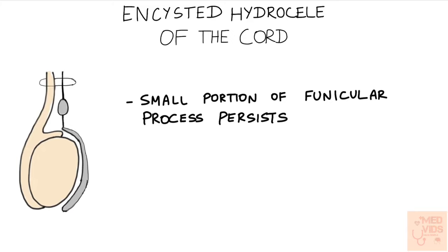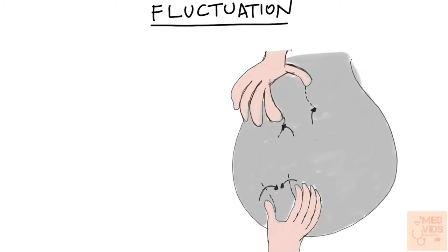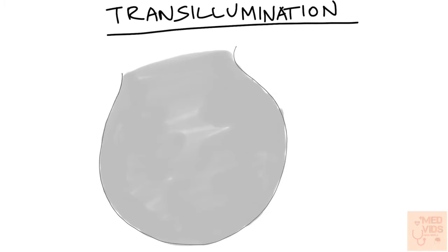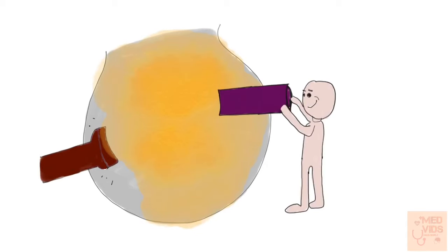Now let us see how to elicit fluctuation. Hold the swelling above and below with your two hands between thumb and other fingers. If you gently press from below, you can feel the fingers of the upper hand going away — this is how fluctuation is elicited. To elicit transillumination, place a torch on the scrotum and turn it on, then observe with a scrotoscope. You can see brilliant transillumination in most hydrocele cases. In some cases of chronic hydrocele, transillumination might not be well appreciated.